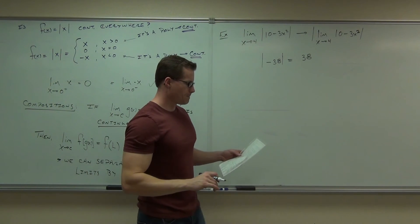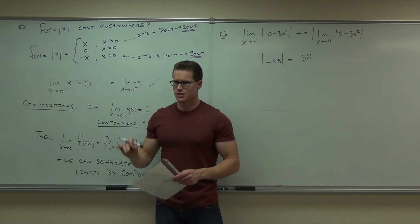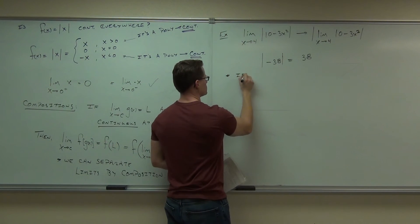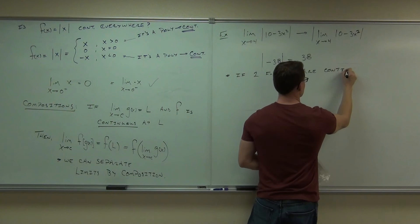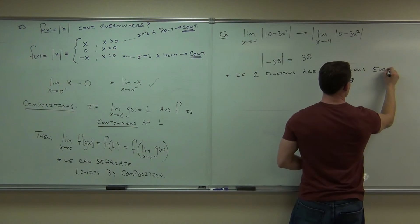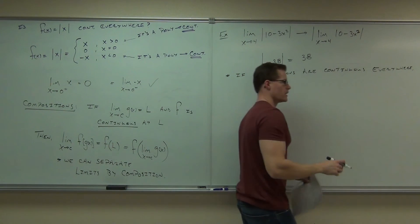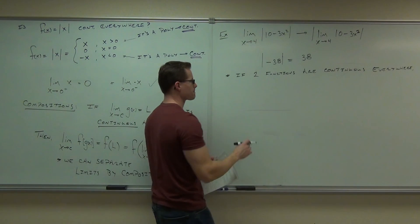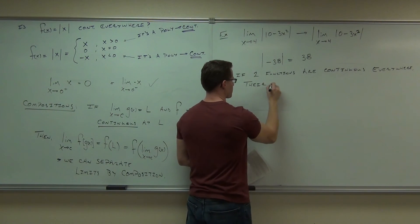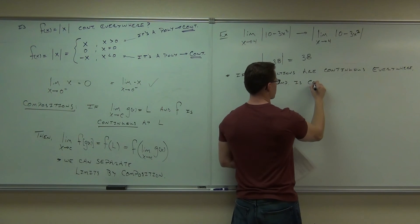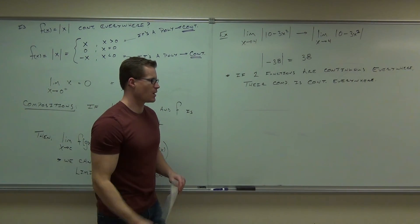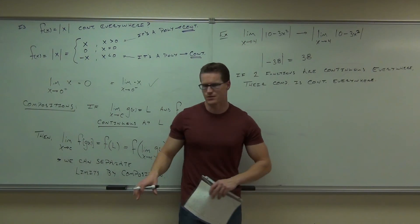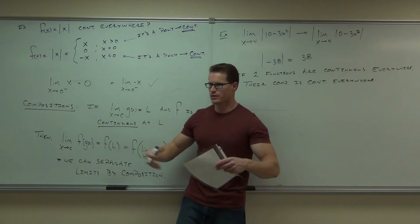A couple notes before we go. So if two functions are continuous everywhere, their composition will be continuous everywhere. Absolute value with anything inside can be considered a composition. Two functions are continuous everywhere, their composition is continuous everywhere. If this always works, if this always continues, and that's always continuous, and you can compose them any way you want, it's still going to be continuous.